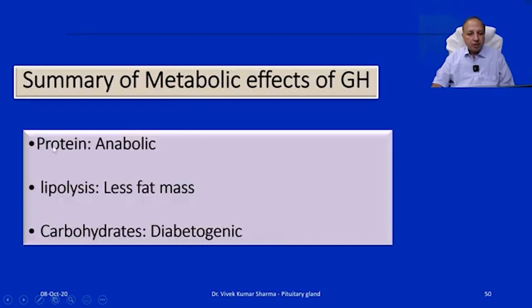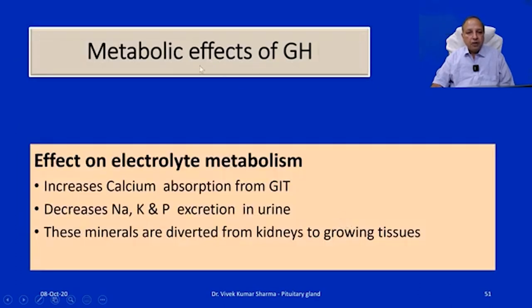To summarize the metabolic effects: on protein, growth hormone is anabolic; on fat, it is lipolytic — decreasing fat mass; on carbohydrates, it is diabetogenic. Regarding electrolyte metabolism, since it is anabolic, it causes increased entry of minerals into cells and increases their absorption from the GIT. It causes increased calcium absorption from the GIT and decreases excretion of sodium, potassium, and phosphorus in urine, so these minerals can be utilized for growth of tissues.